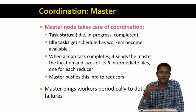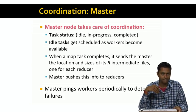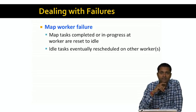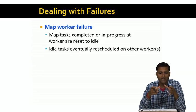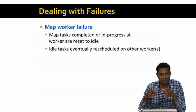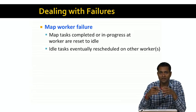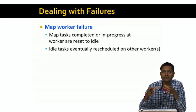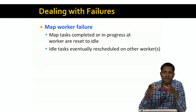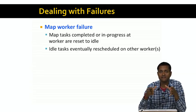The master also periodically pings the workers to detect whether a worker has failed. If a map worker fails, all the map tasks that were scheduled on that map worker may have failed. The output of a map task is written to the local file system of the map worker, so if a map worker fails, all the intermediate output created by all the map tasks that ran on that worker are lost. What the master does is reset to idle the status of every task that was either completed or in progress on that worker, and all those tasks need to be eventually redone and rescheduled on other workers.